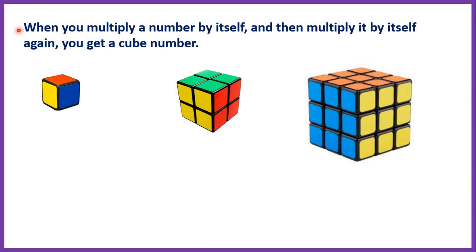When you multiply a number by itself and then multiply it by itself again, you get a cube number. They're called cube numbers because they can be represented as cubes.